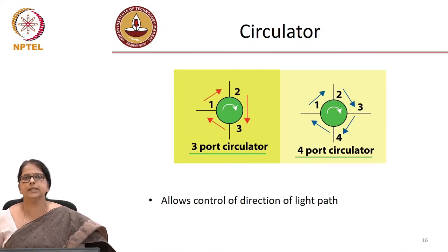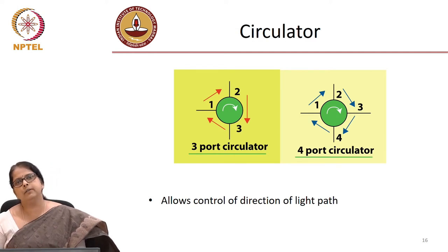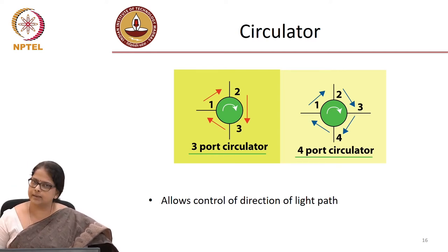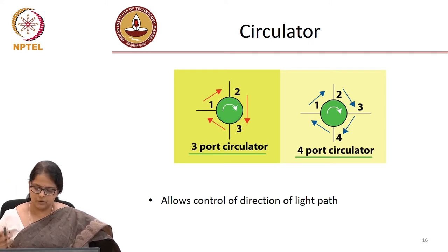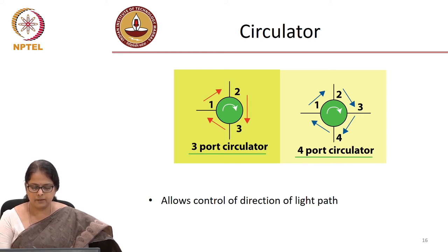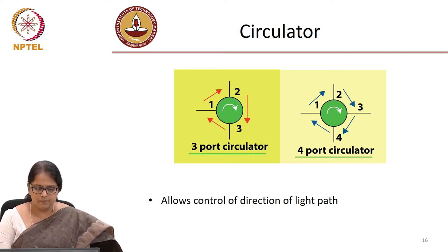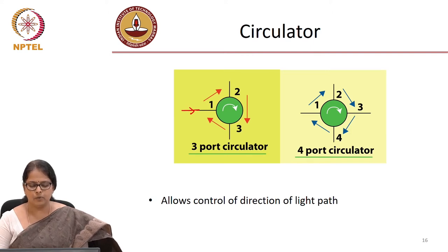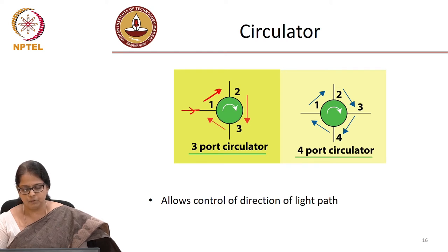We now move on to the next device which is a circulator, which is a very useful device as far as an optical network is concerned. It basically allows you to control the direction of light path. It is a three port device — you can also have it as a four port device. With input in port 1, the light from that input is available in port 2 and it is not available in port 3.